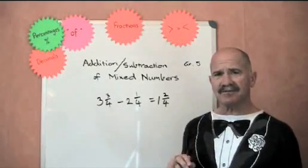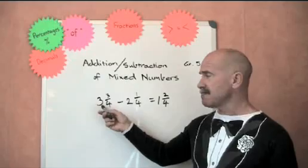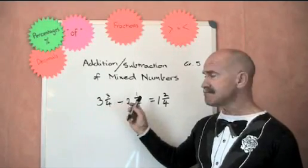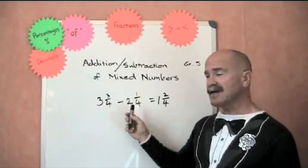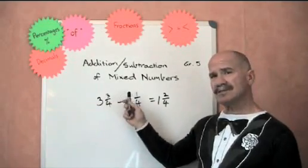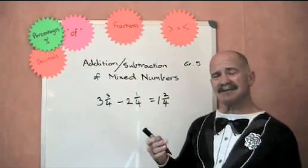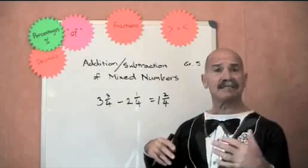Now, we can run into difficulty with subtraction, though, doing it this way. Because if that 3 quarters was 1 quarter, and this was 3 quarters, then we would have 3 take away 2 is 1, but we would have 1 quarter take away 3 quarters. It gets a little bit difficult. We end up not being able to do it, or going into negative.